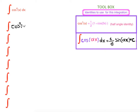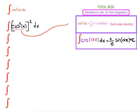We rewrite it as cosine squared of x, all in parenthesis, squared, dx. So cosine squared of x, squared, equals cosine fourth of x. At this point we're going to use our identity.